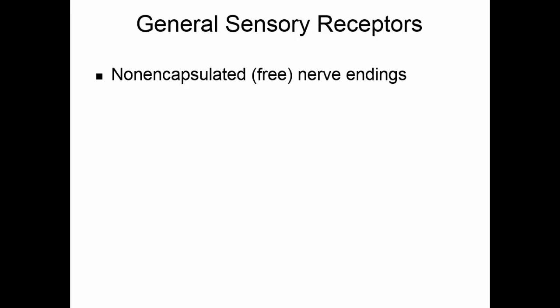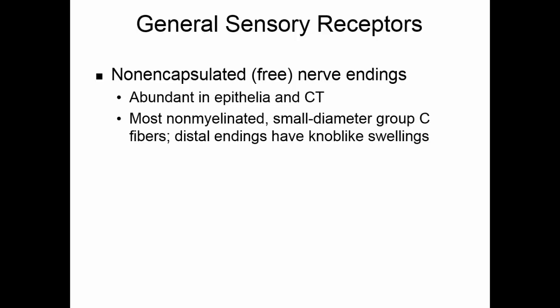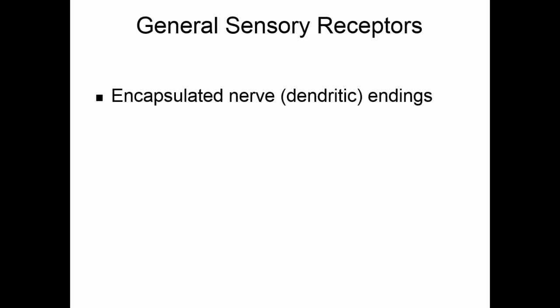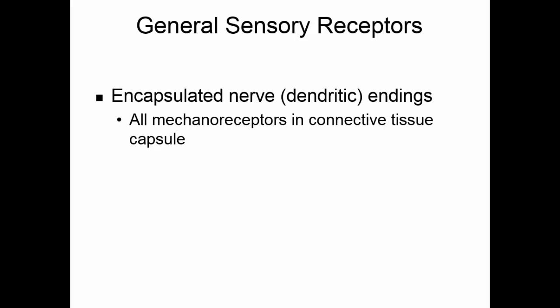Non-encapsulated or free nerve endings are very abundant in the epithelial tissue and in your connective tissue. Most of these are non-myelinated nerves — the small diameter group C type of fibers. The distal endings of the dendrites have knob-like swellings on them. They respond mostly to temperature and pain and to light touch and itch. The root hair plexuses are non-encapsulated dendrites. Encapsulated nerve endings are connective tissue capsules around the ends of dendrites — these are all mechanoreceptors, picking up pressure and touch.